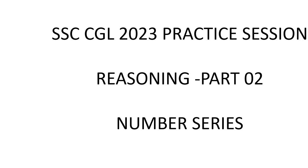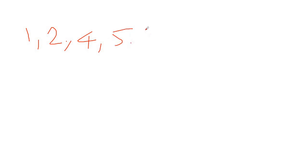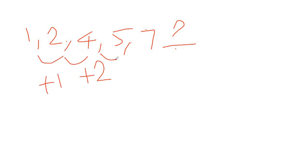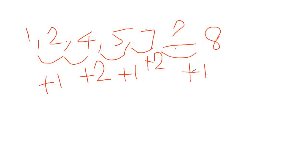How do we solve this? Let's see an overview with an example. The series is 1, 2, 4, 5, 7, X. If we see this, the pattern is plus 1, plus 2, plus 1, plus 2. So the next value with plus 1 is 8. This is the number series question.